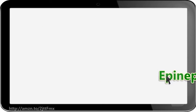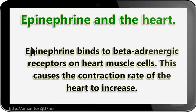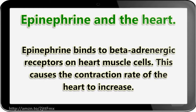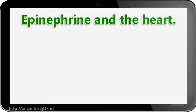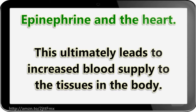Epinephrine in the heart. Epinephrine binds to beta-adrenergic receptors on heart muscle cells. This causes the contraction rate of the heart to increase, which ultimately leads to increased blood supply to the tissues in the body.